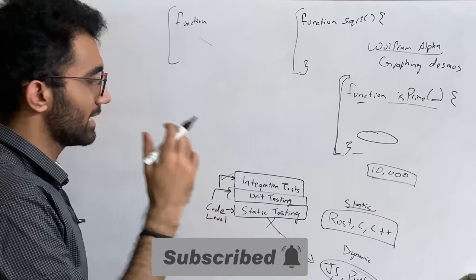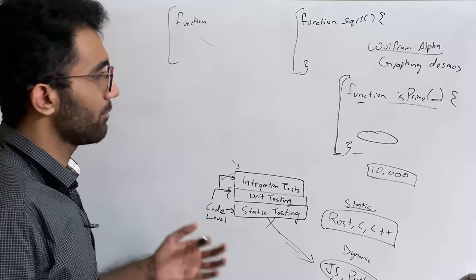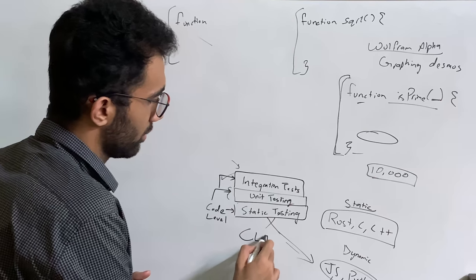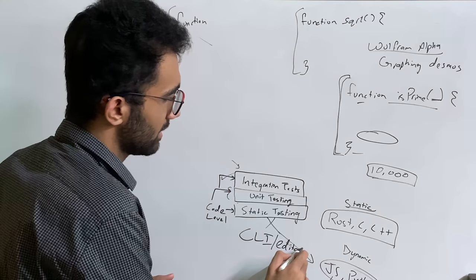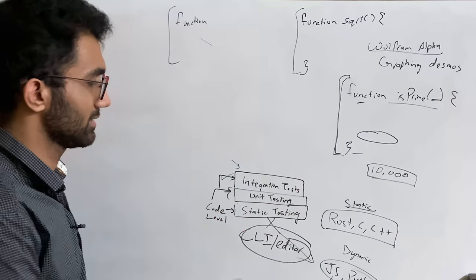By code level, what I mean is that you're writing some sort of code which evaluates this code and everything is happening in the CLI or in your editor itself. The reason I mentioned this is because the other testing, the last form of testing which we will discuss, is a bit interesting.